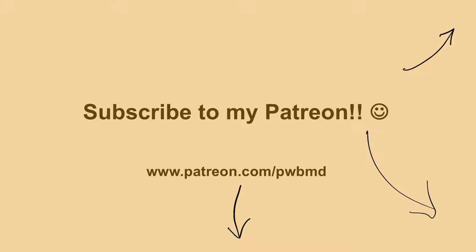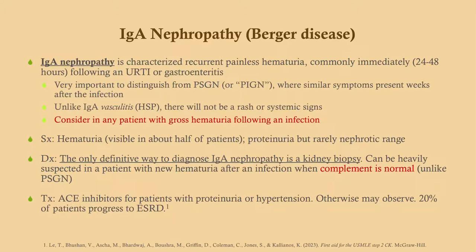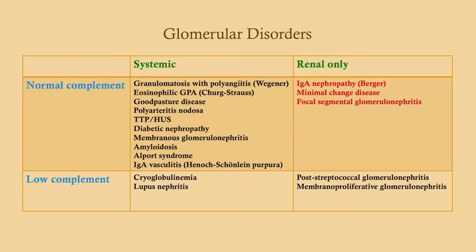We're going to start out with the renal disorders that have normal complement. These are all glomerulonephropathies that have normal complement. It helps to just remember the ones that have low complement and then everything else falls into place, because there aren't that many.